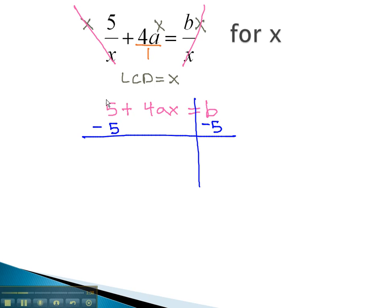We will do the same thing to both sides, leaving 4ax on the left side. On the right side, you notice we do not have like terms. Thus, we will leave the subtraction problem b minus 5.